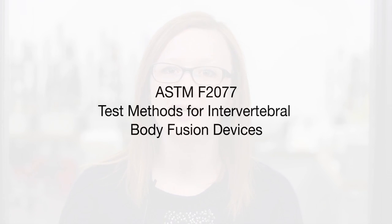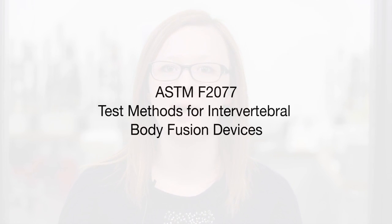Now that we have reviewed some of the general guidelines, let's discuss the three test standards in today's video. The first type of testing we'll cover, static and dynamic construct testing, is typically performed in accordance with ASTM F2077, test methods for intervertebral body fusion devices. ASTM F2077 is used to provide a standard comparison to a predicate device. The test program contains compression, compression shear, and torsion tests. Testing should consist of six of the worst case constructs for both static and dynamic testing.